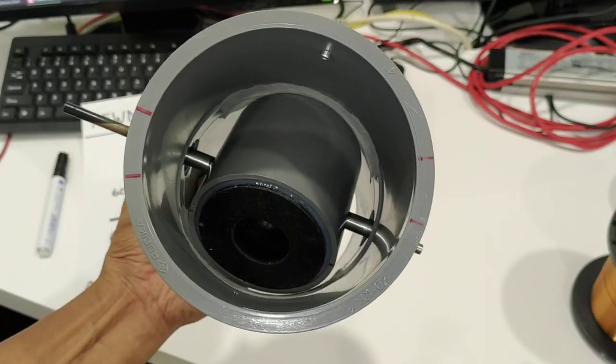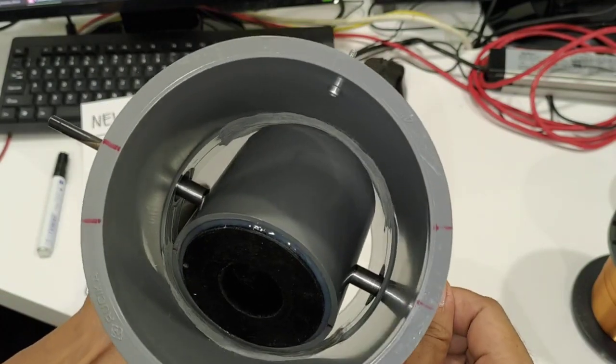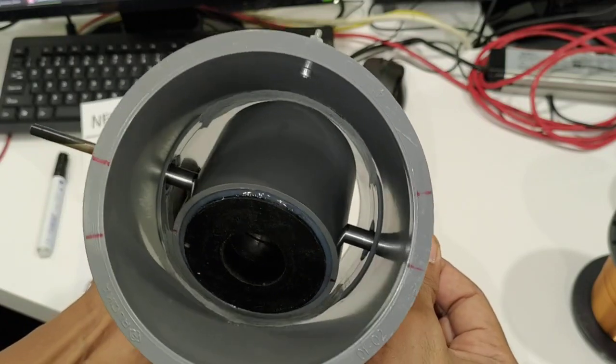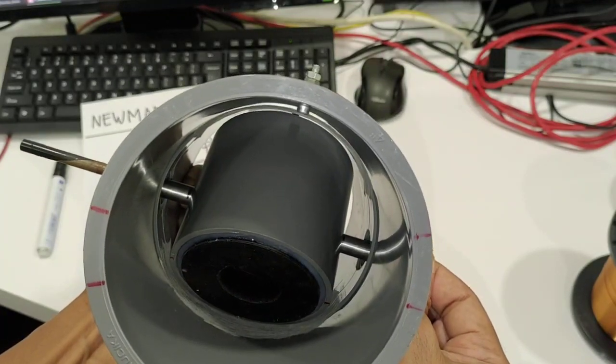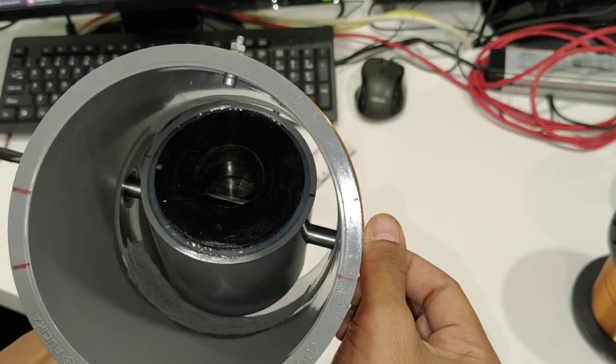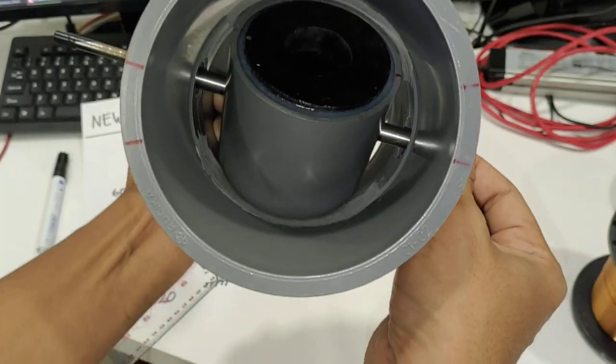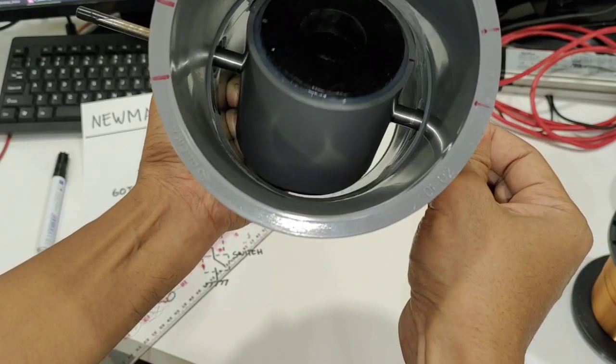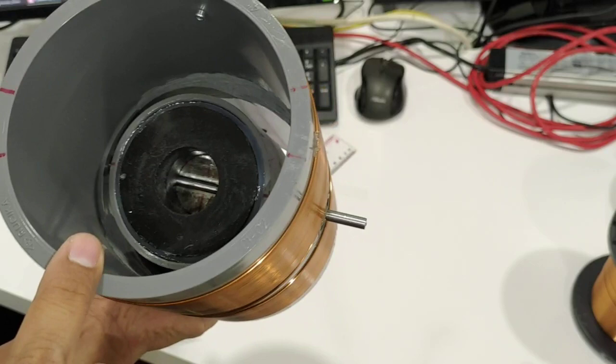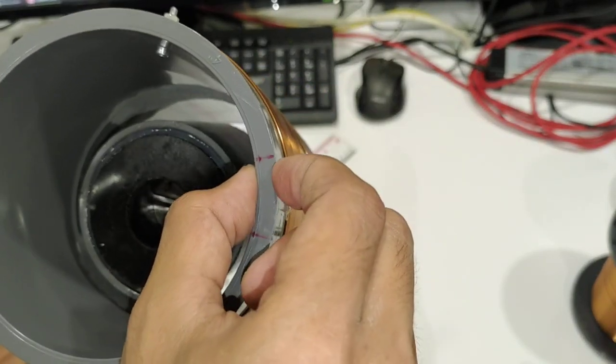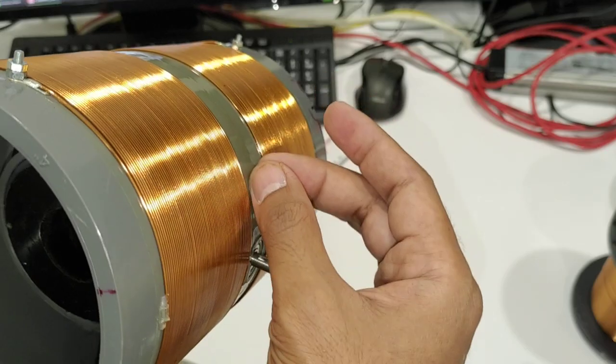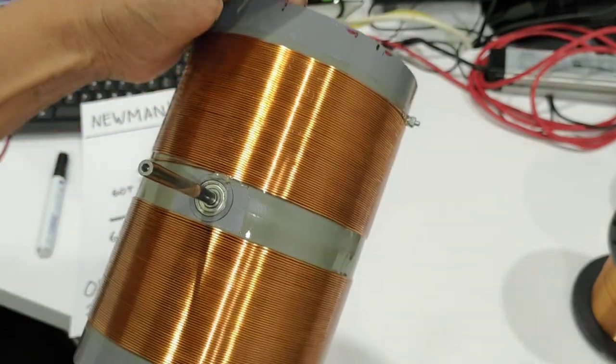You can also see that I have removed some of the inner material because there is not much space between the rotor and the housing. I have to remove this material. Eventually the thickness of this pipe is thicker here around the center of this PVC part.